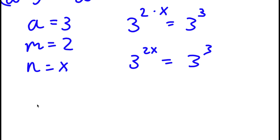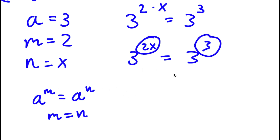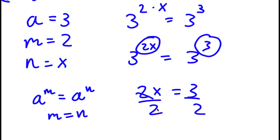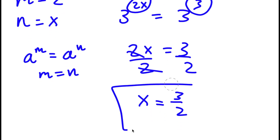Now if I have a to the power of m equals a to the power of n, then m equals n — if the bases are the same, the exponents are equal. So in this case 2x equals 3. Dividing both sides by 2, x equals 3 over 2. So this is my answer.